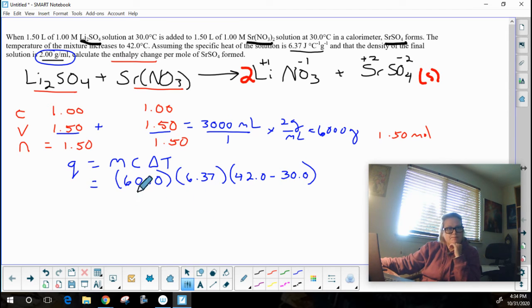Quick note about sig figs here. We've got to remember that there's 3 with the 6,000. There's 3 sig figs here because there was 3 in the volume.